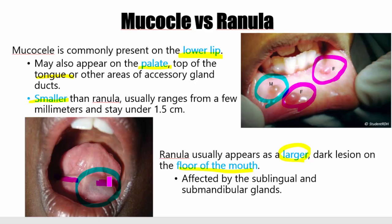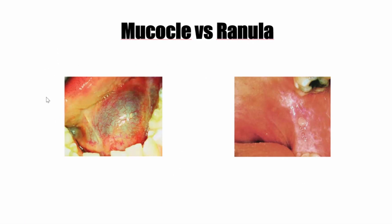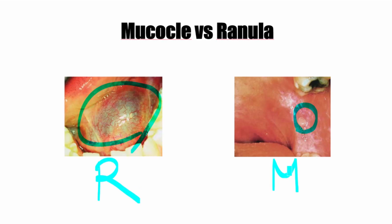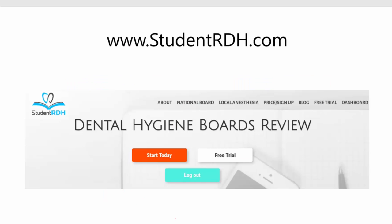Now I hope we understand what a mucocele is and what a ranula is. Let's take one more example to make sure we understand it once and for all. Which one is the ranula? You probably already know — this one, the big one that's under the tongue. And the small one is the mucocele. I hope this has been helpful and that you finally understand what a ranula is and what a mucocele is.